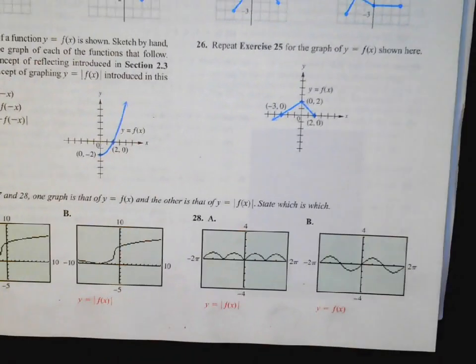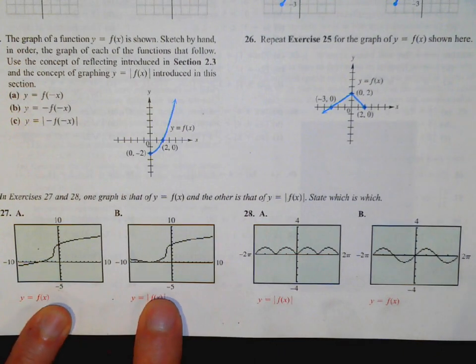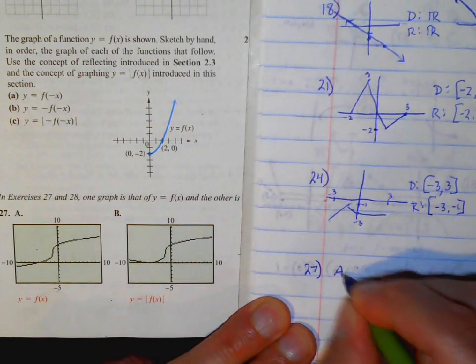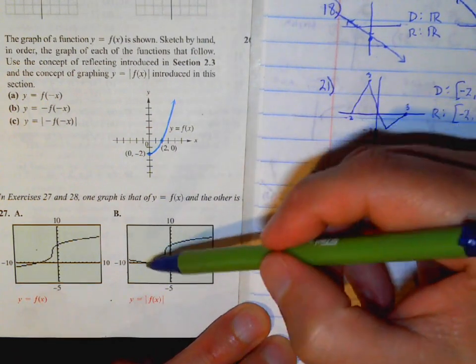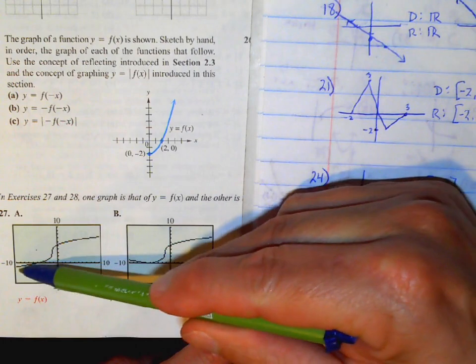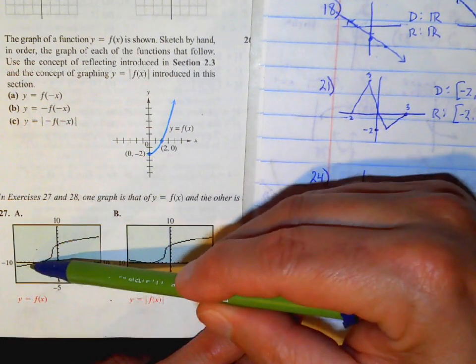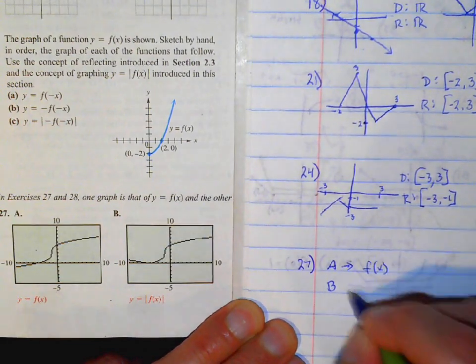Number 27. One of the two graphs is f of x and the other is the absolute value of f of x. Notice absolute value would be the reflection up above — you can't have negatives with absolute value. So the one that goes negative has to be f of x, and the only positive one has to be the absolute value of f of x.